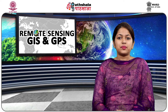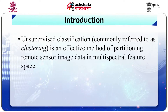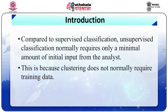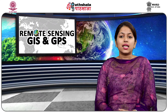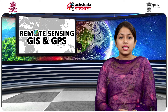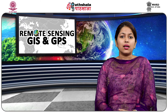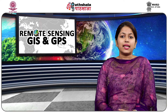Unsupervised classification, commonly referred to as clustering, is an effective method of partitioning remote sensor data in a multi-spectral feature space and extracting land cover information. Compared to supervised classification, unsupervised classification normally requires only a minimal amount of initial input from the analyst, because clustering does not normally require training data. Numerical operations search for natural groupings of the spectral properties of pixels in multi-spectral feature space, and the clustering process results in a classification map consisting of spectral classes, which the analyst then assigns to thematic information classes such as forest or agriculture.